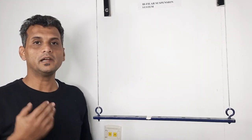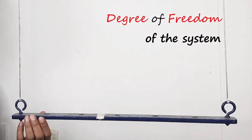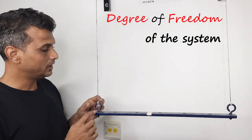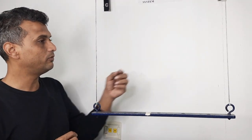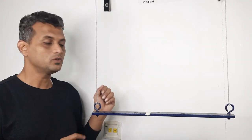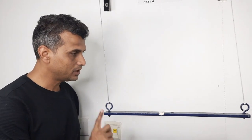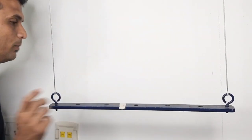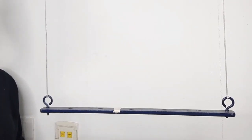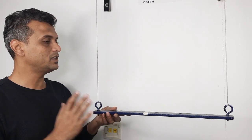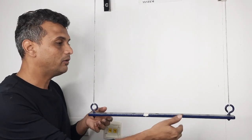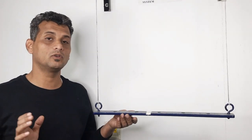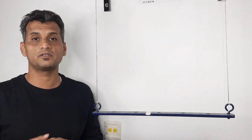Before I start, let us try to answer how many degrees of freedom the system will have. Observing the system carefully, I can see a solid bar suspended with two strings. If I give a gentle push in this direction, the system will oscillate. Similarly, if I give movement in this direction, the system will vibrate. These are two degrees of freedom. If I try to move the system upward and downward, it will not vibrate because the strings are inextensible.